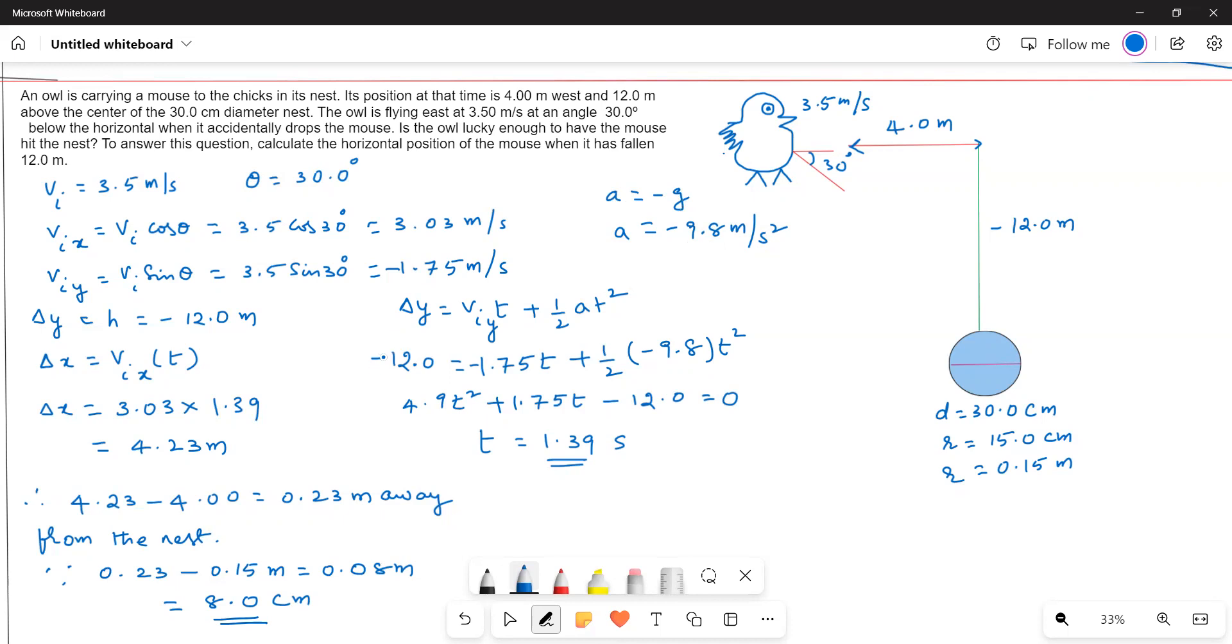Plugging in the values, we get t = 1.39 seconds. Multiplying the horizontal velocity with this time gives us the horizontal displacement of 4.23 meters.